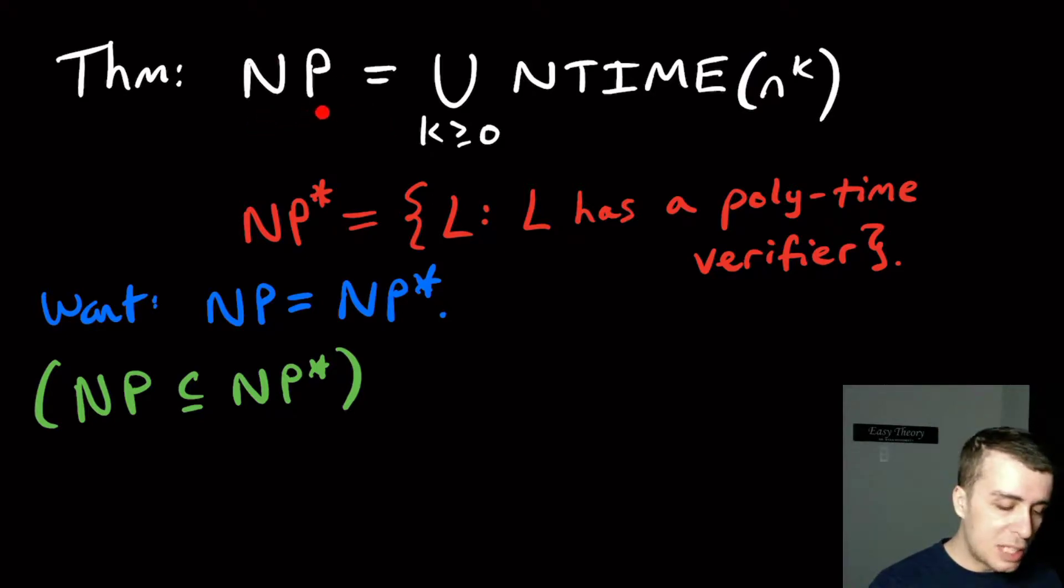So that means that if I have a polynomial time non-deterministic machine, then I can construct an equivalent verifier for a particular language that I'm interested in and vice versa. So we're going to show that these two sets are the same. These sets of languages are the same. So NP equals NP star.